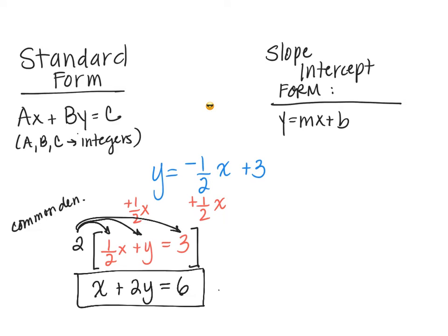And there is the standard form of this equation that was given to us in slope-intercept form. So to recap, I moved the negative one-half x to the other side because in standard form, x and y are on one side together. And then to clear my fraction, I multiplied by a common denominator.